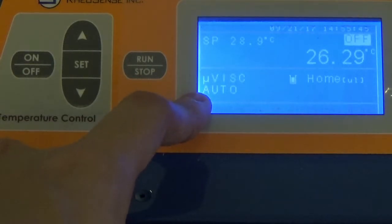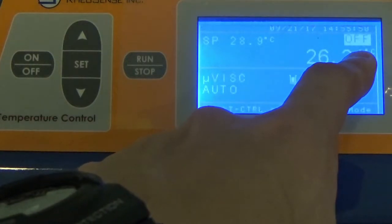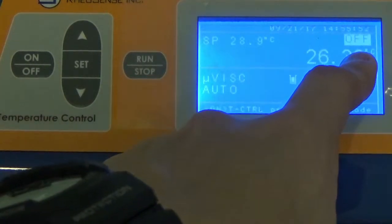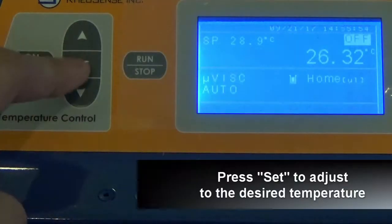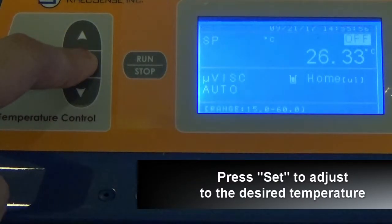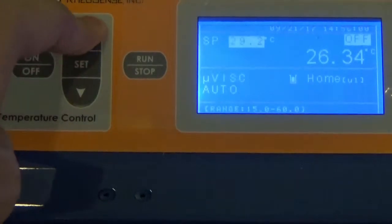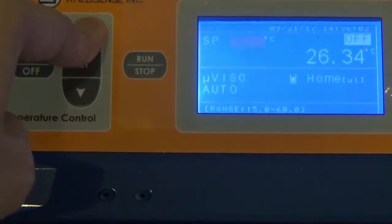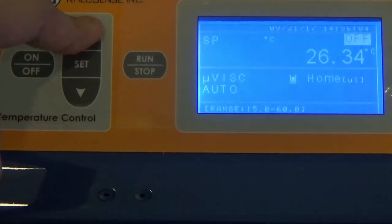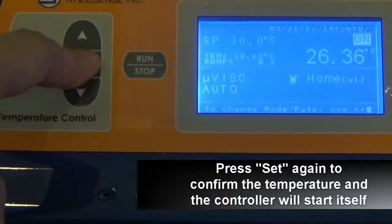The 'off' here means that the temperature control is now off. If you wish to set the temperature, just press 'set' and you'll be able to change the temperature. For example, you can increase it to 30 degrees. When you're all set, just press 'set' again.